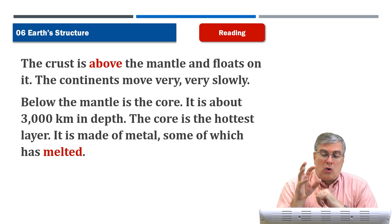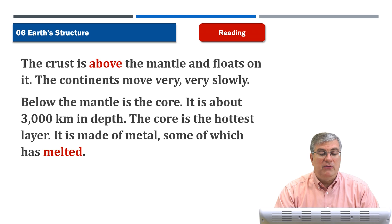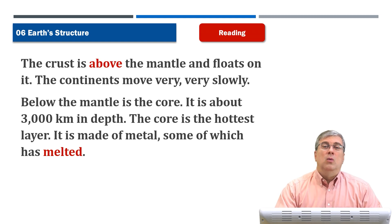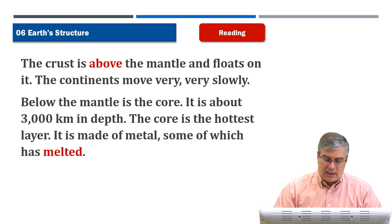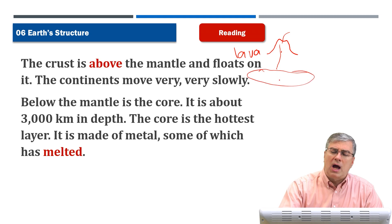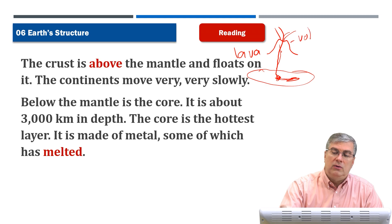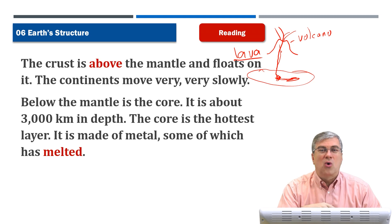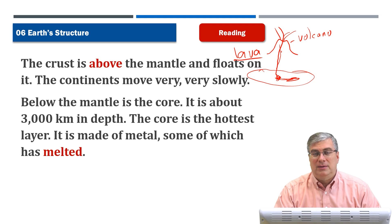Below the mantle is the core. It is about 3,000 kilometers in depth. The core is the hottest layer — it is made of metal, some of which has melted. It's so hot in the core that the metal is liquid. When we experience liquid rock in nature, we call it lava — that's the material that comes up out of a volcano. But the volcano is picking up material from the mantle coming up to the surface, not from the core, which is way too deep.